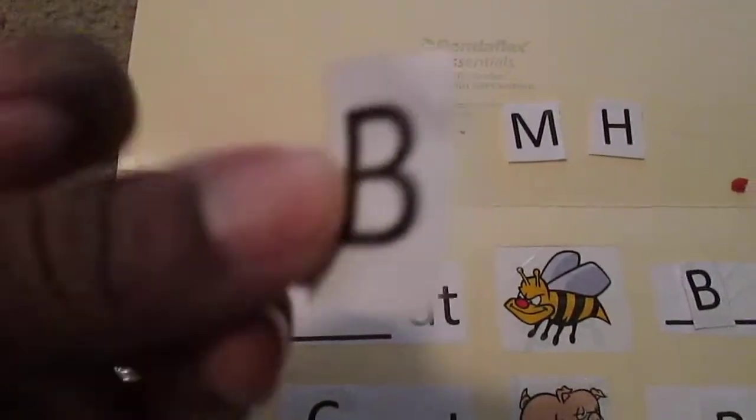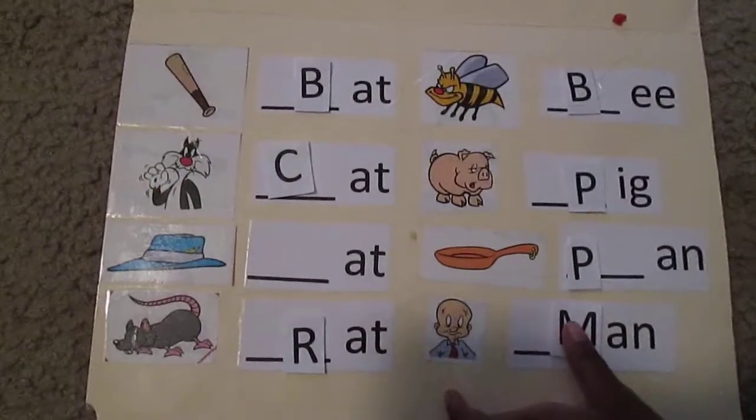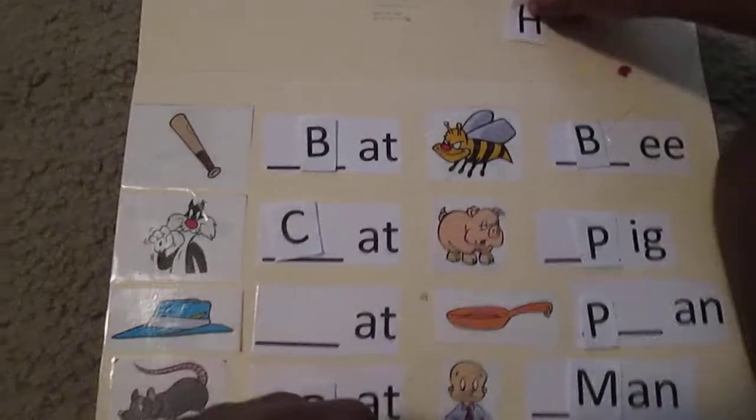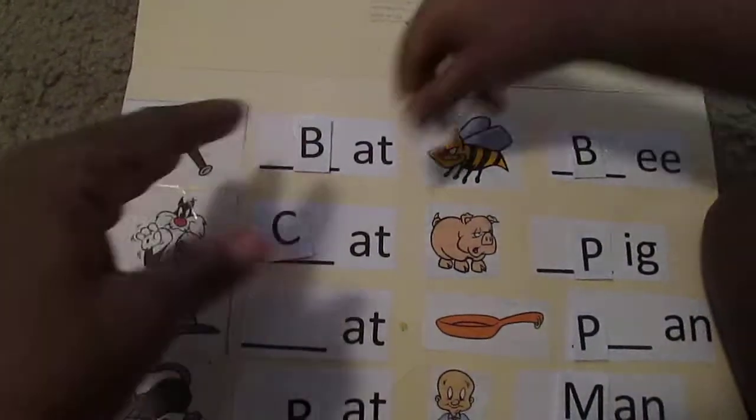And then I took the beginning letter of each word and cut that out and laminated it on both sides. That's because what I did was I took some two-sided tape and put it. And what she can do is tape them down on the words that they go on and create the entire word. And it helps her start recognizing these particular words.